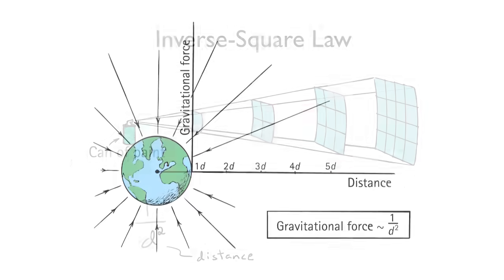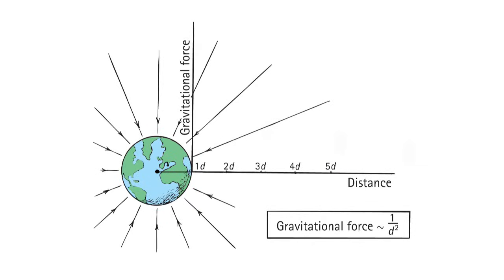Gravity follows this inverse square law, as is spelled out by this graphic. On the y-axis, you have the gravitational force. On the x-axis, you have distance.